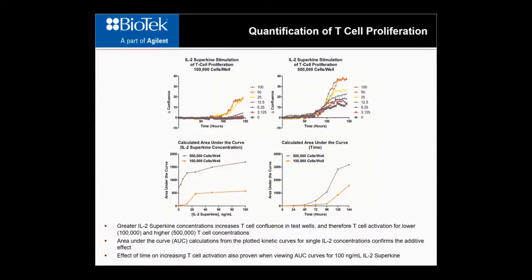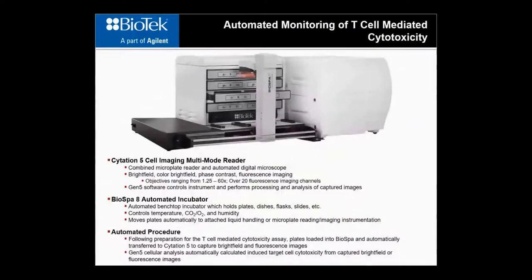When confluence values are plotted over time from wells containing either 100,000 or 500,000 T-cells for all different concentrations of IL-2 superkine tested, you can see how increased levels of the superkine cause an increase in confluence. By calculating the area under the curve for the two T-cell concentrations, either based upon superkine concentration or time, we can infer that increases in both positively affect the level of T-cell activation.